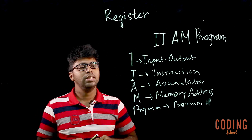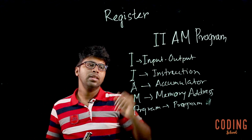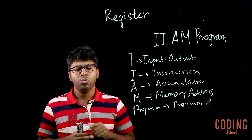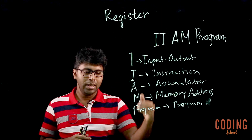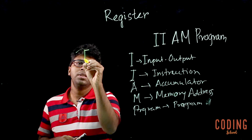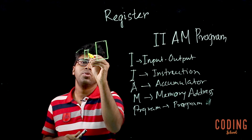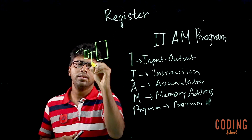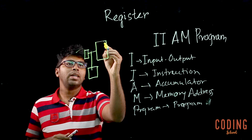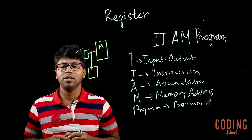Now we have to know what to do. First, we have the input-output register. When we have computer input, we have to click on the keyboard or mouse — we have to click on the input device first. We have to use the memory, so we have to use this input device. This is the input device and this is the memory. When we click on this memory, we have to enter this, and this register is called the input-output register.